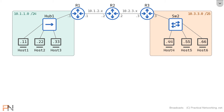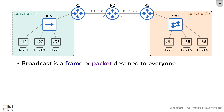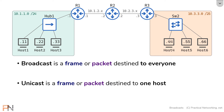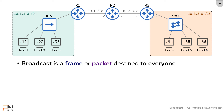A broadcast is any frame or packet that is destined to everybody on the local network. This is the opposite of a unicast, which is a frame or packet destined to a single host. These are sometimes referred to as one-to-all communication for broadcast or one-to-one communication for unicast. Notice a broadcast is a frame or a packet, which means there's a layer 2 and a layer 3 implication.